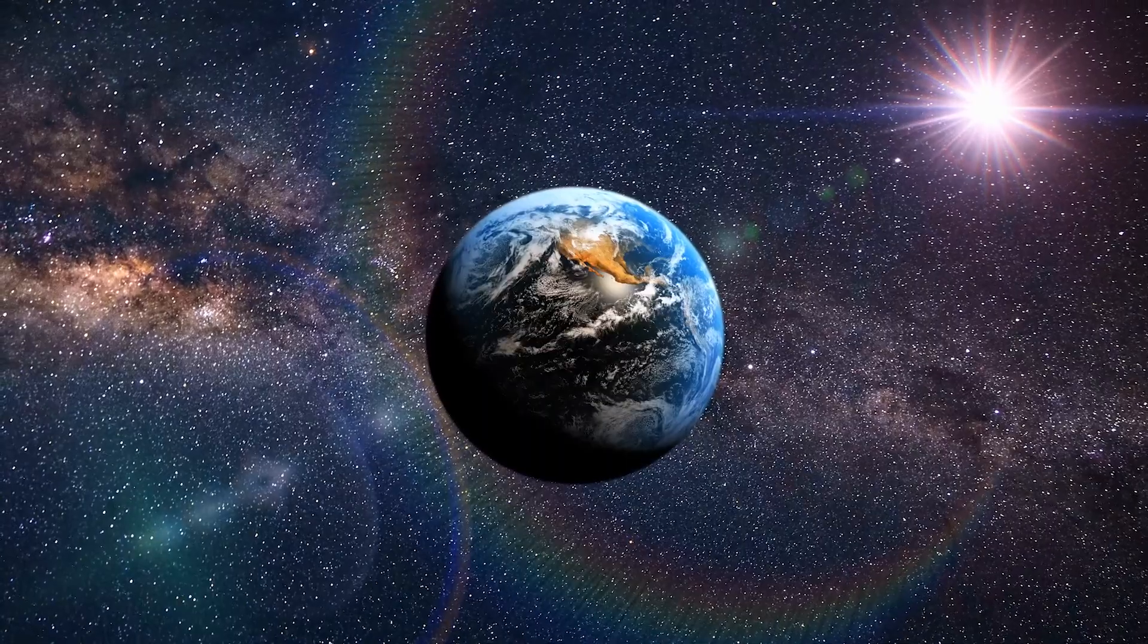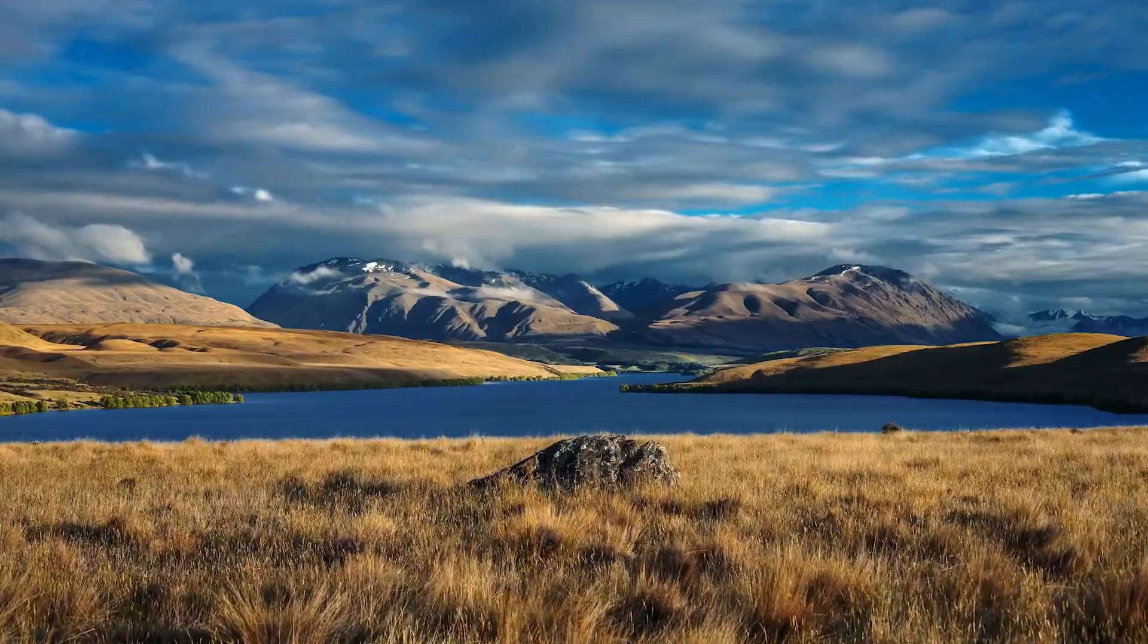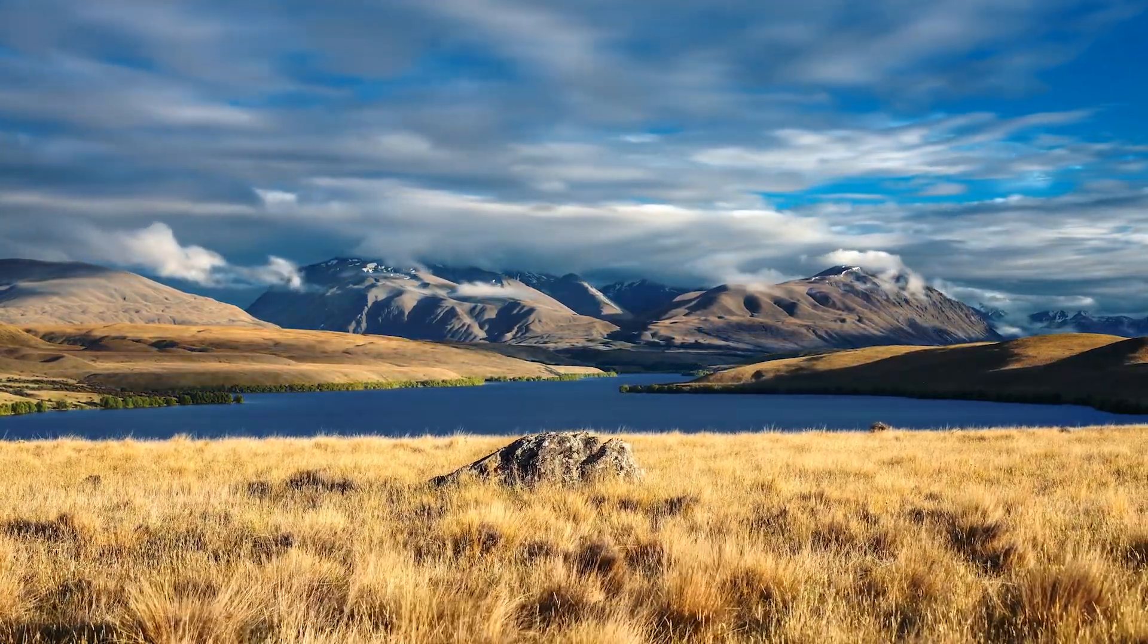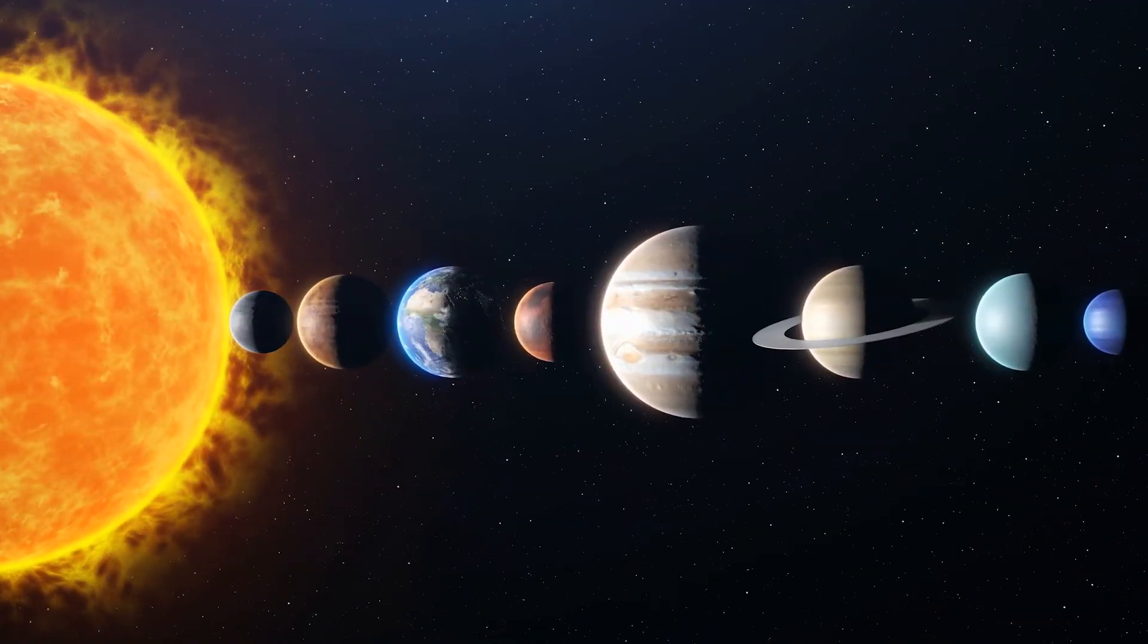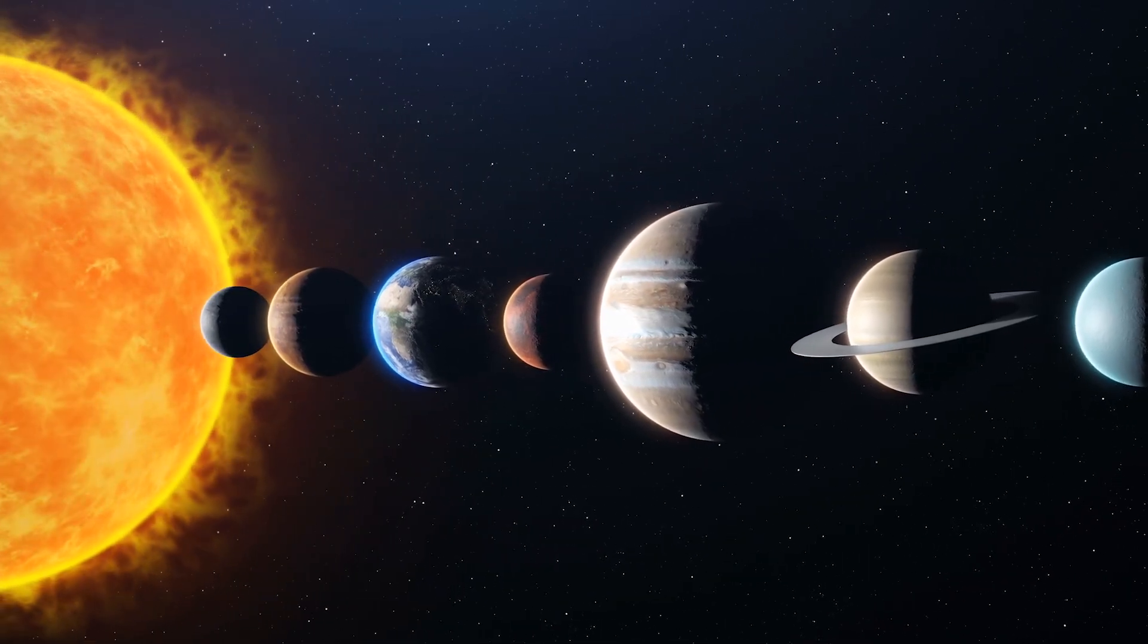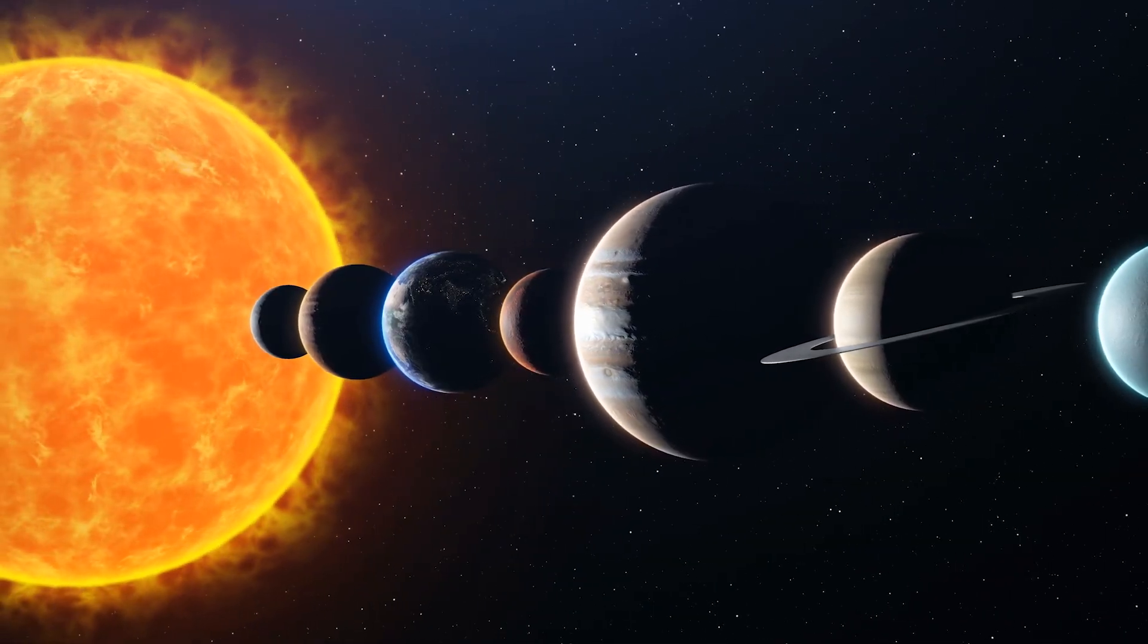Being within the habitable zone is not only important for providing light for photosynthesis, but also for maintaining a temperature range that can support life. Earth's position in this zone ensures that it receives a balanced amount of the Sun's heat, enough to keep the planet warm, but not so much that it becomes inhospitable.